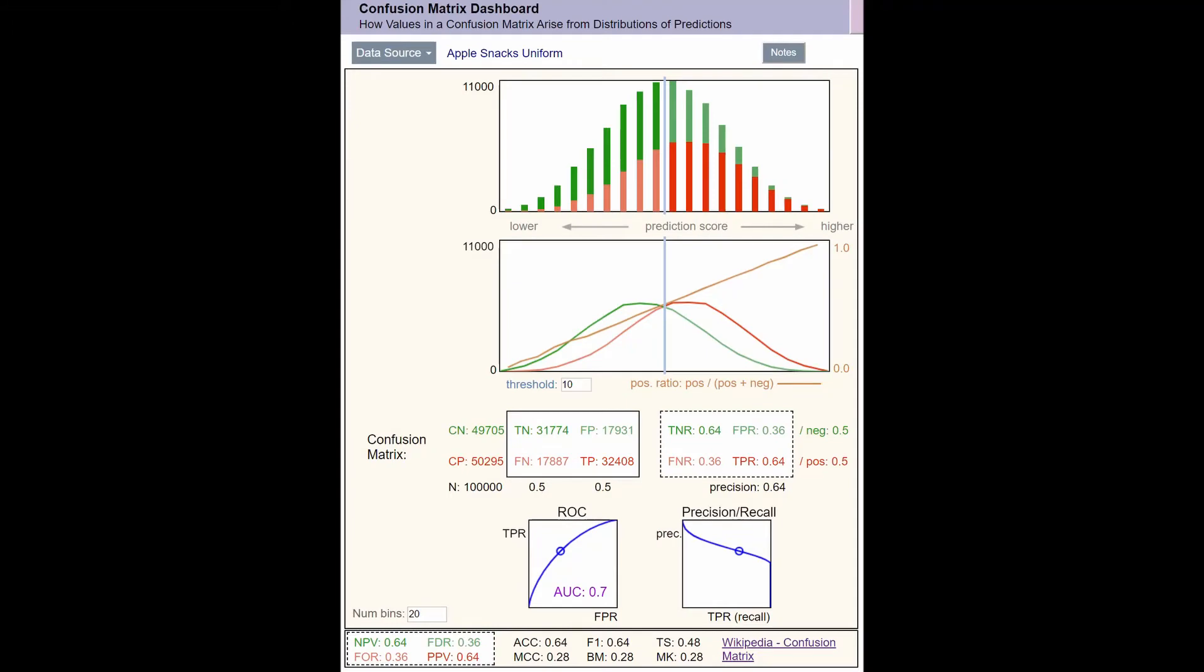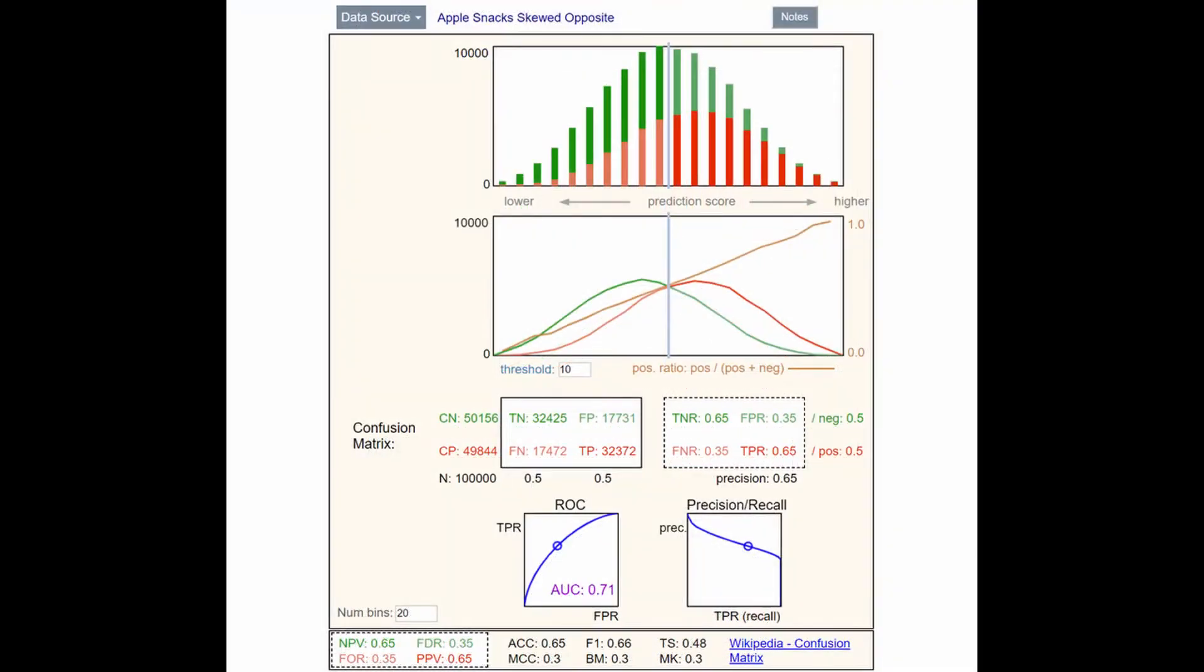The dashboard shows two graphs. The horizontal axis is prediction score for events you observe to come out one way or another, positive or negative. Score can be on any scale, but sample events are grouped into bins of successive score ranges. The vertical axis shows negative outcome events in green, positive outcomes in red. The upper graph plots the events as stacked histograms. The lower graph plots the negative and positive outcome events separately as distribution curves.